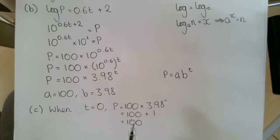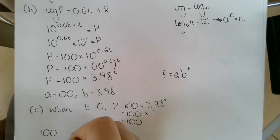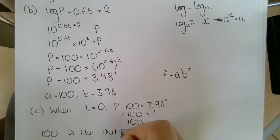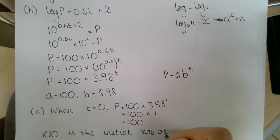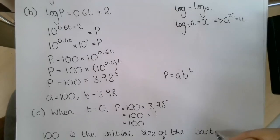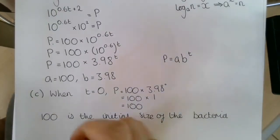So when t equals 0, p equals 100, which is our value of a. So that means 100 must be the initial size of the bacteria population, because that's what our value of p is, the bacteria population.